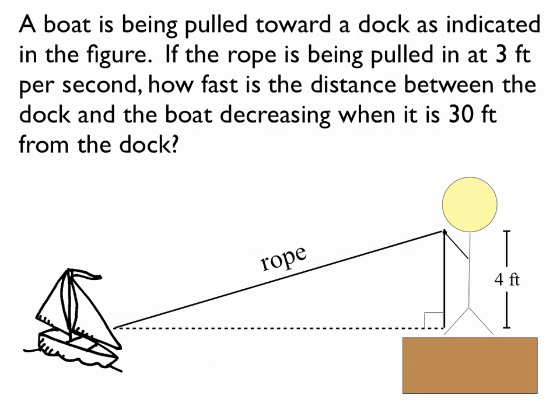So as an example, a boat is being pulled towards a dock as indicated in the figure. If the rope is being pulled in at 3 feet per second, how fast is the distance between the dock and the boat decreasing when it is 30 feet from the dock? So you have this person here who has a rope attached to the boat, and they're pulling the rope in towards themselves. They're standing on a dock, and the boat is going to be coming towards the dock on that dashed line, and the height of the rope where the person is at is about 4 feet.